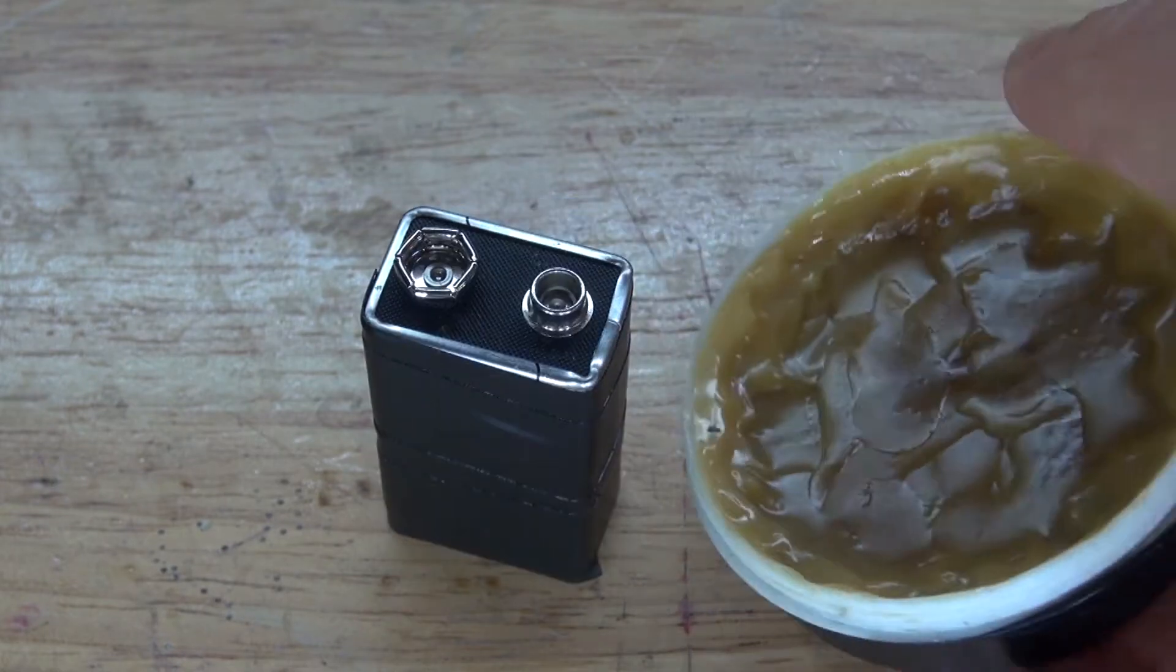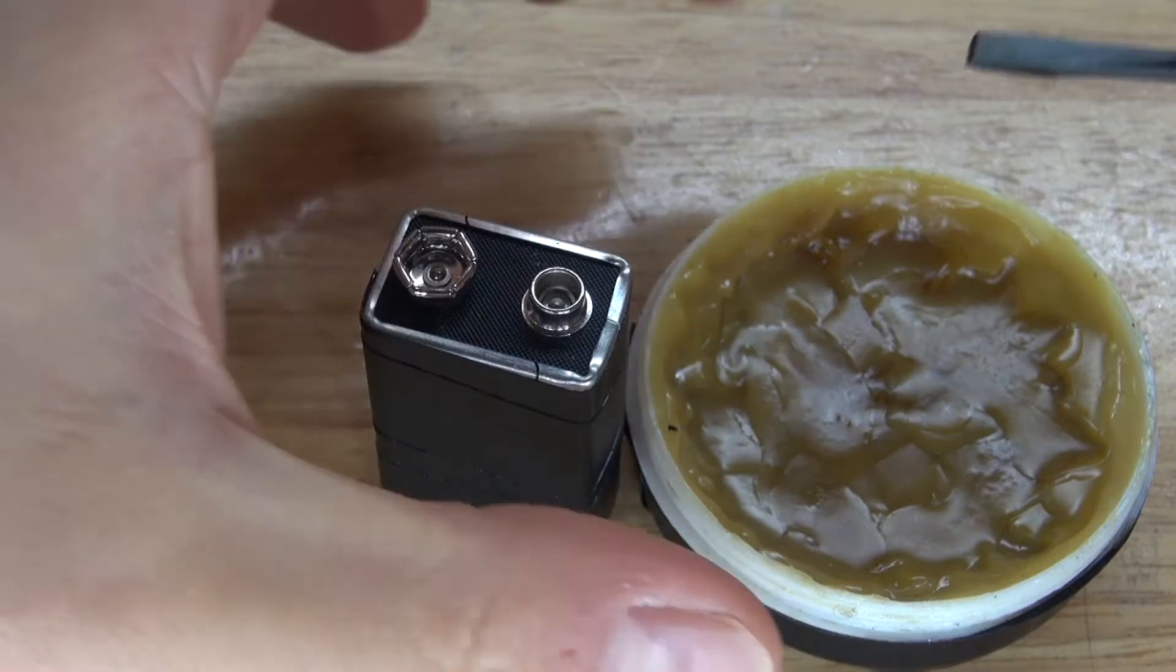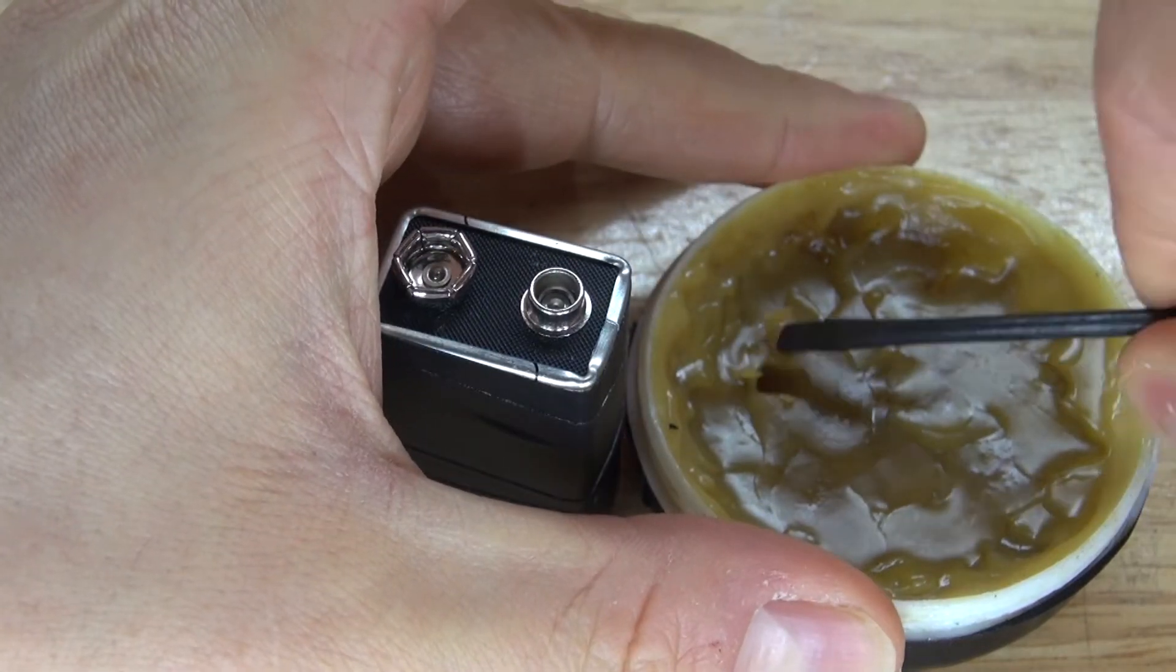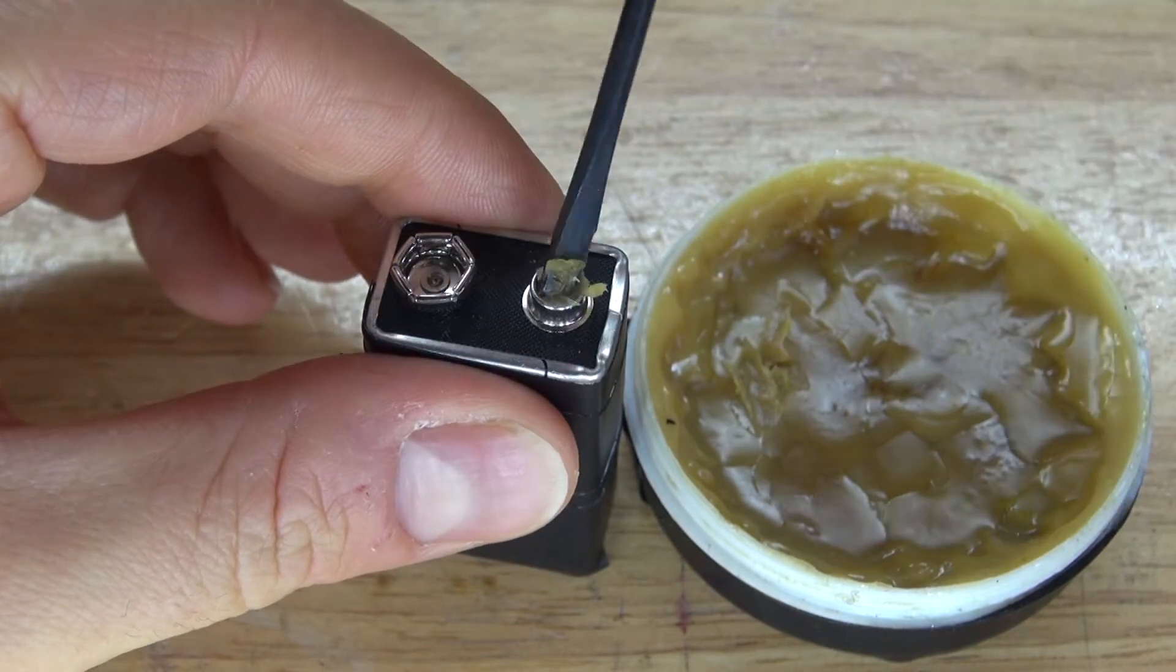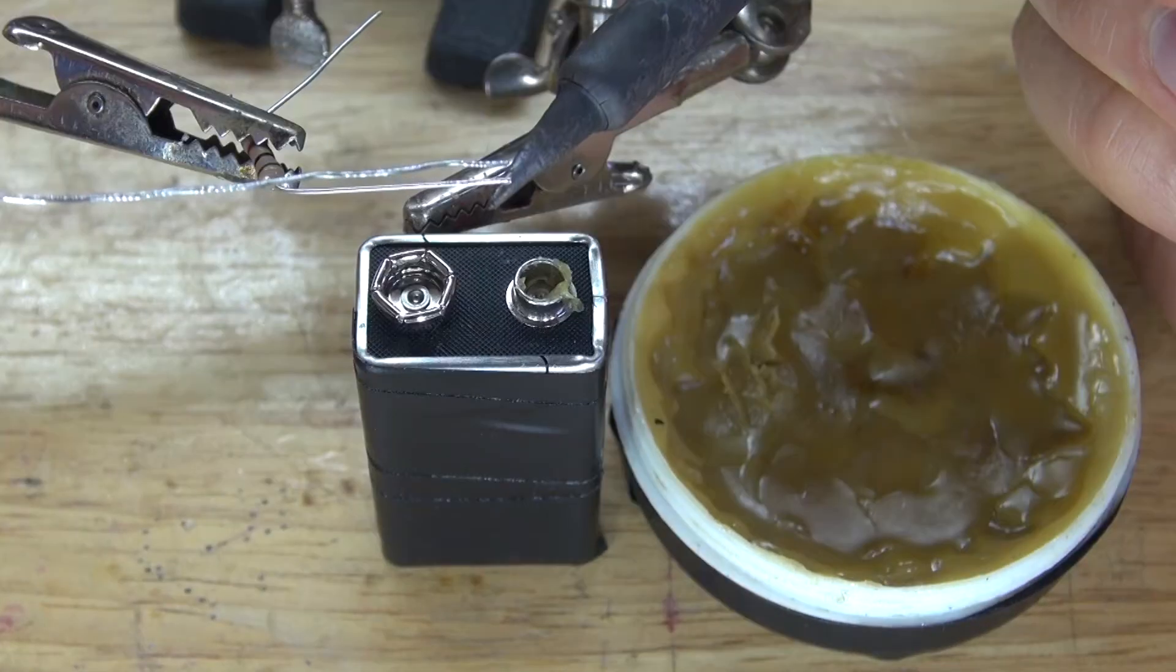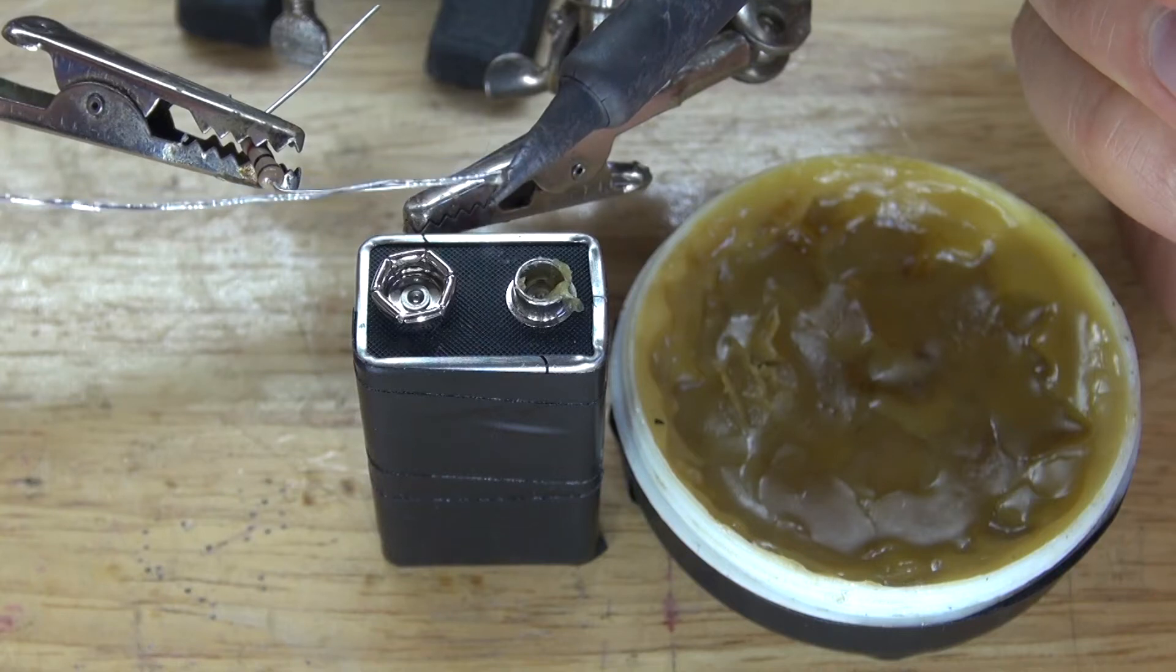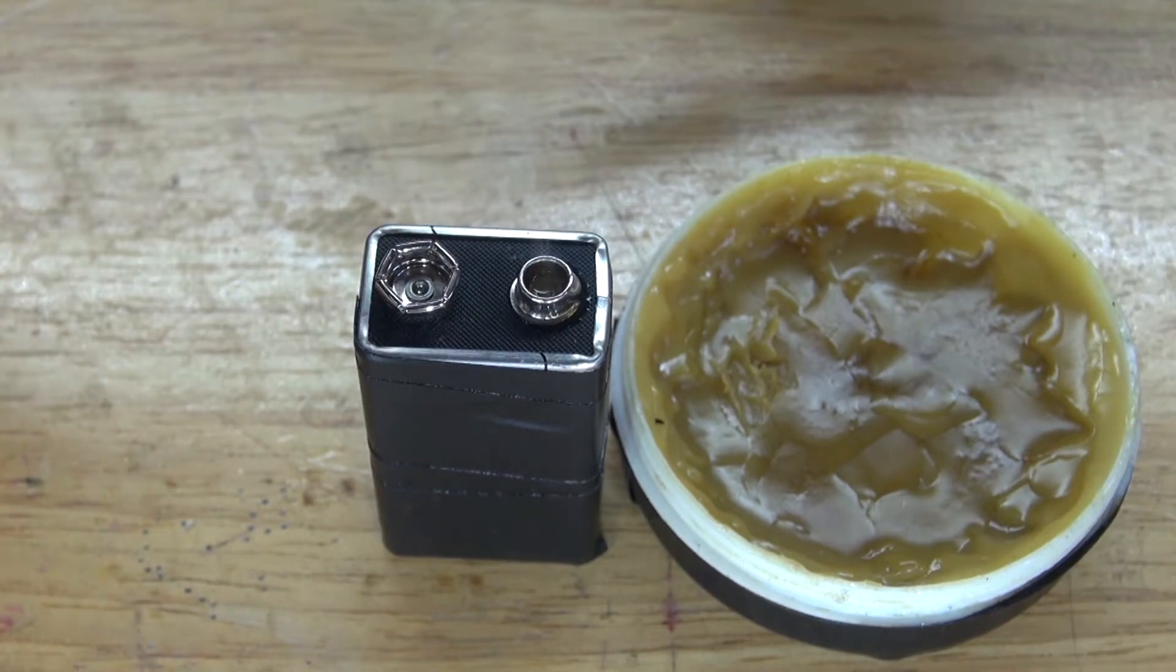First I'm going to take the 9-volt battery and the solder flux. Scoop out a generous amount of solder flux and place it on the connectors of the 9-volt battery. Next take a 1k ohm resistor, solder tin one of the leads and now solder tin the positive terminal of the 9-volt battery.